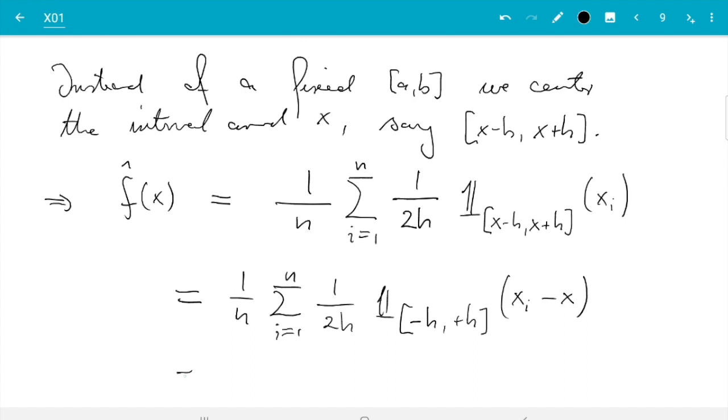Finally, I want to pull out the h as much as possible. So then we can write 1/n sum from i=1 to n, and then let's have the 1/h separately. And then I write 1/2 indicator function [-1, +1], and I can do that if I instead divide by h here, (x_i - x)/h. So if I divide both the numbers in here and the argument by h, then that indicator function takes the value 1 if and only if that one takes the value 1.